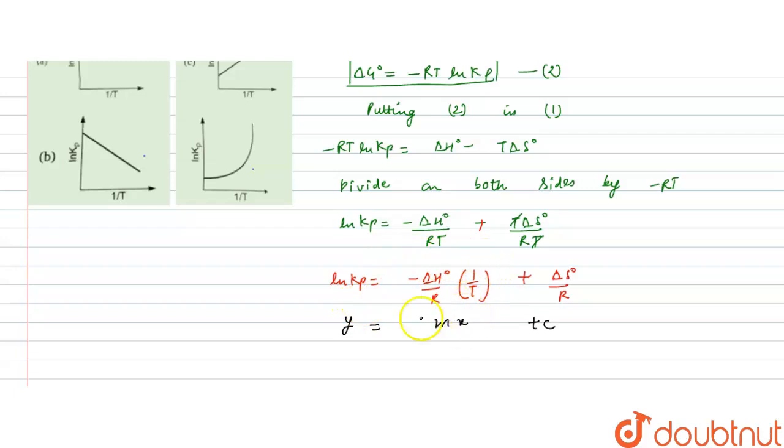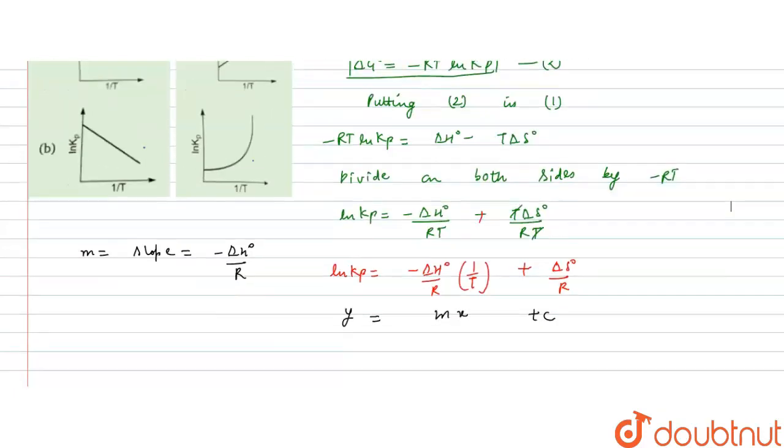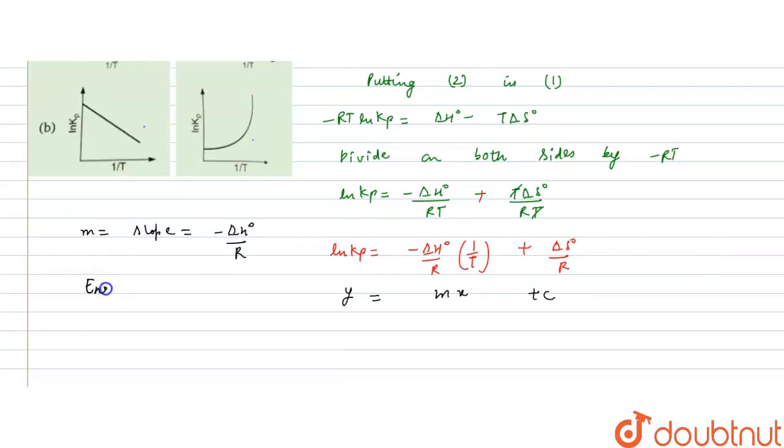C is the intercept and here slope is minus delta H⁰ by R. M is the slope which equals minus delta H⁰ by R. Now in the question it is given that an endothermic reaction, so for an endothermic reaction, delta H is always positive, it means heat is always absorbed.